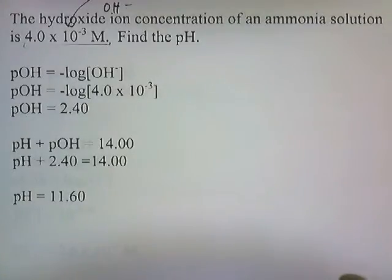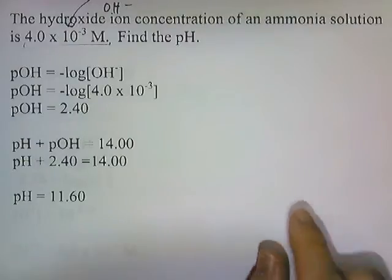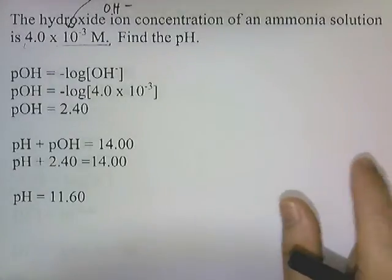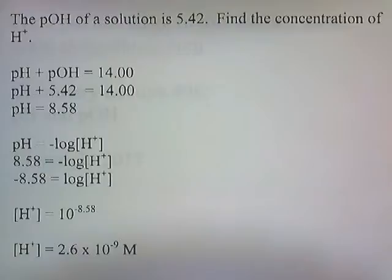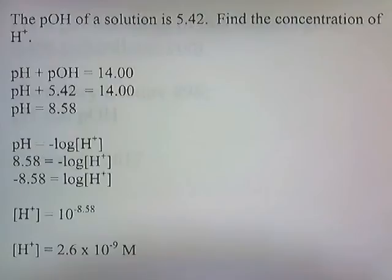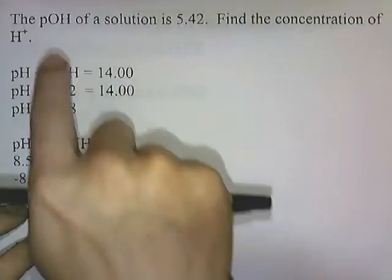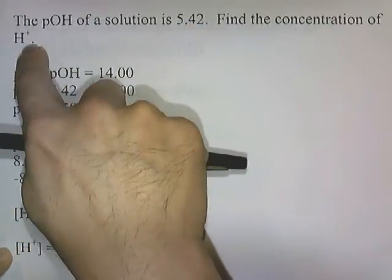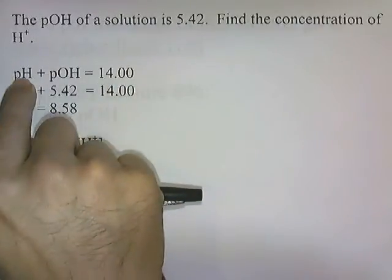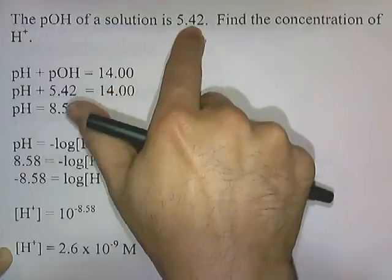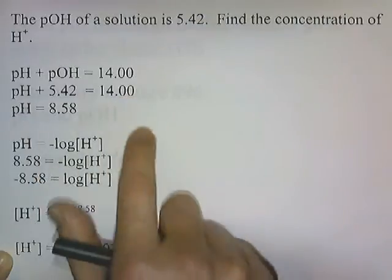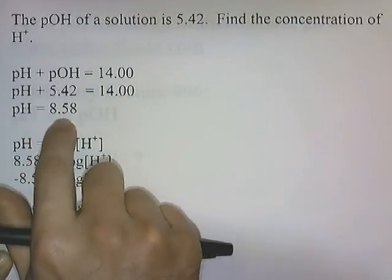Let's try one more problem — the opposite approach. In this next problem, they give us either the pH or the pOH and we have to find the concentration of something. The pOH of a solution is 5.42; find the concentration of hydrogen ion. Since pOH is 5.42, we use pH plus pOH equals 14. So pH plus 5.42 equals 14, and solving for pH gives us 14 minus 5.42, which is 8.58.